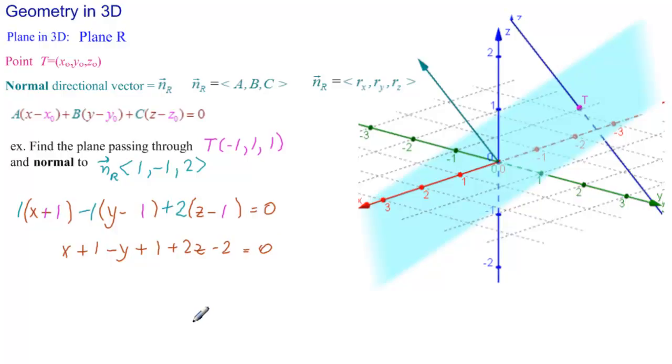And we usually write the XYZ part in front and combine the numbers to get a constant on the right side. X minus Y plus 2Z. And actually here we have plus 2 minus 2, so there's no constant. This is an equation for this unique plane passing through T and normal to N.